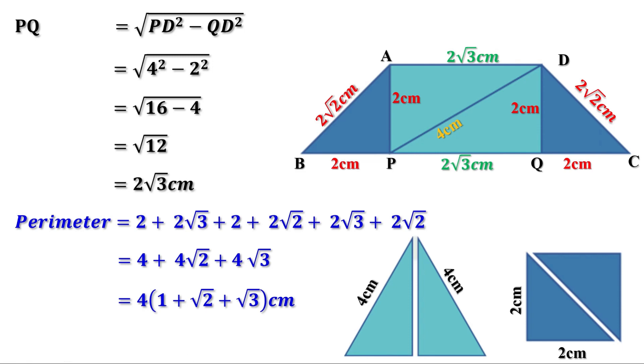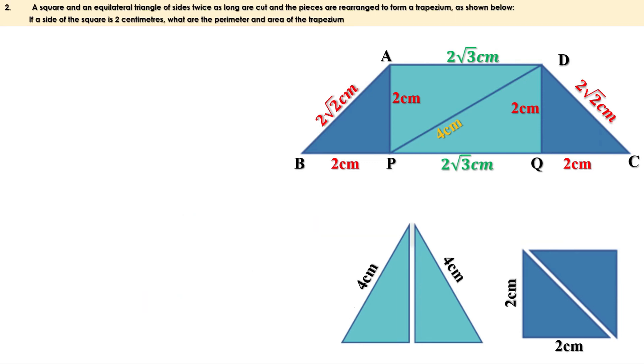If you need the approximate value, you can substitute the approximate values of root 2 and root 3. Now we have to find the area of this trapezium.